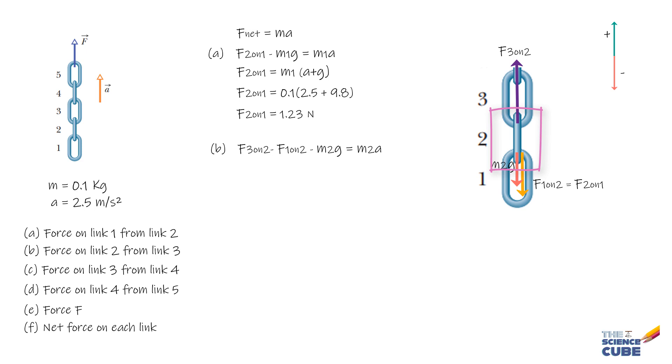We could write F3 on 2 equals F1 on 2 plus M2G plus M2A. If we solve by putting the required values, either they are known or we have calculated, F3 on 2 equals 2.46 Newtons.